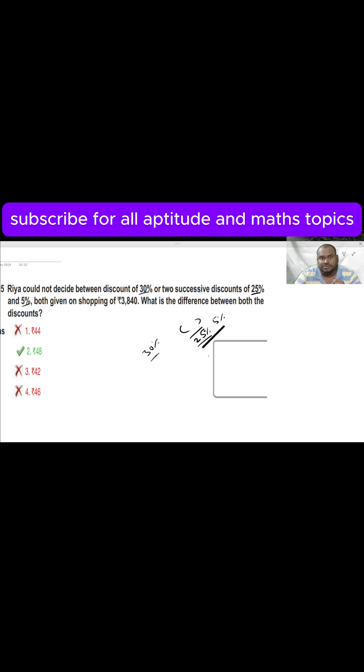So now that's what we need to find here. Actually, Rhea has a clarity of 30 percent discount, she knows. But she doesn't know how to calculate these two successive discounts 25 and 5.